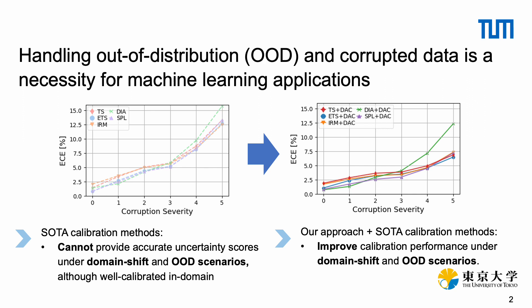we propose a method that can easily be added to existing approaches, thereby enhancing OOD calibration performance as seen in the right figure. By incorporating our proposed technique into existing methods, our aim is to improve uncertainty estimation in out-of-distribution scenarios and during domain shifts.